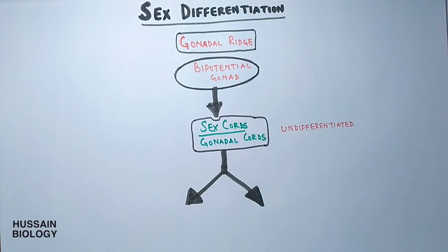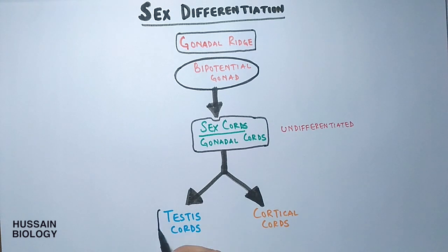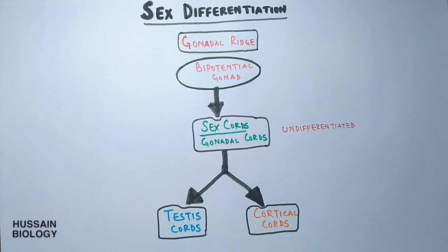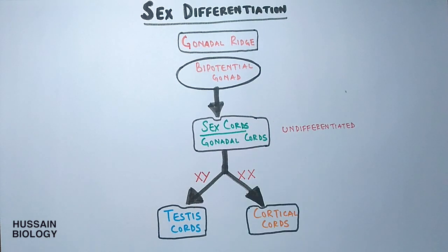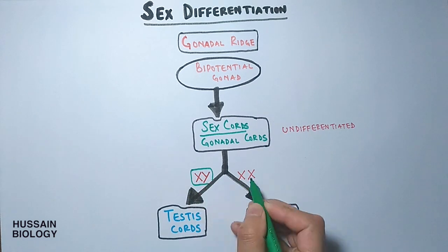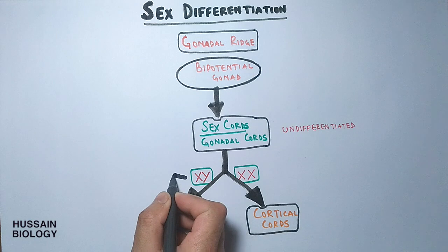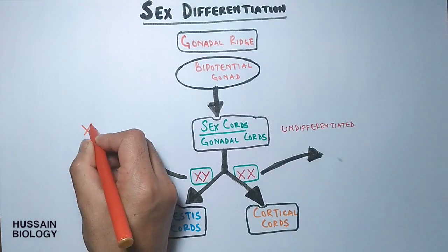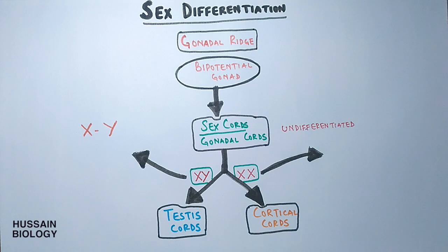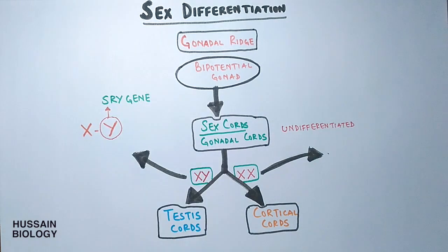The sex cord will either turn into testes cords for males or cortical cords for females. When the cell has an XY condition, we get testes cords; when it has an XX condition, it becomes cortical cords. What makes XY male and XX female? In the XY condition, the Y chromosome has one important gene: the SRY gene — the sex-determining region.